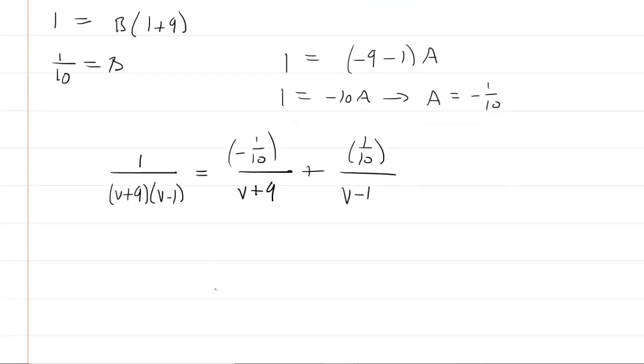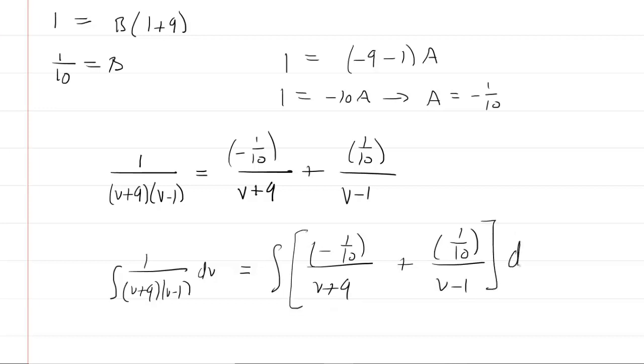So that's how we can rewrite that expression using partial fractions. So now we can actually integrate. So we're going to go ahead and we're going to integrate the 1 over v plus 9 times v minus 1 with respect to v. This will equal the integral of negative 1/10 over v plus 9 plus positive 1/10 over v minus 1, all with respect to v.